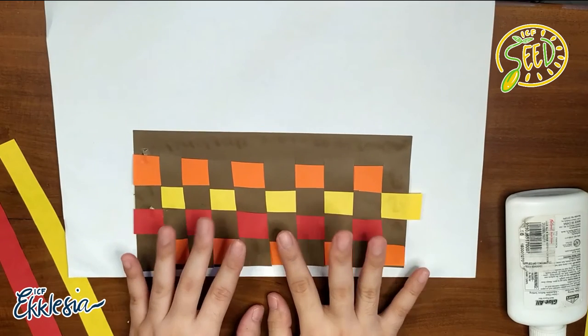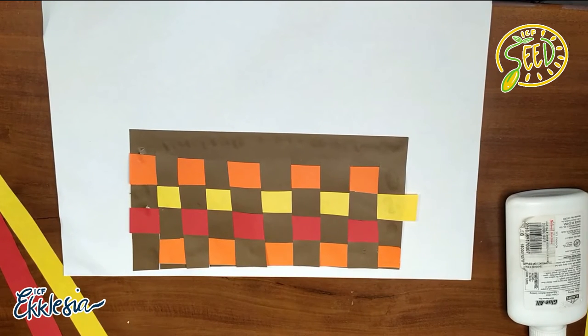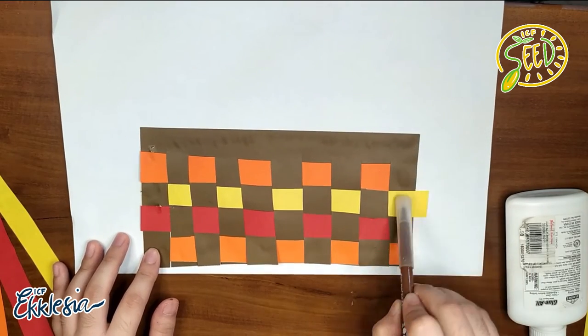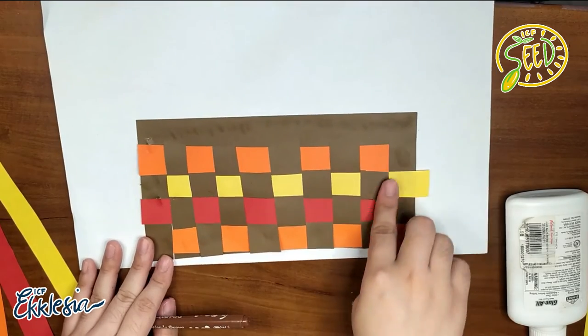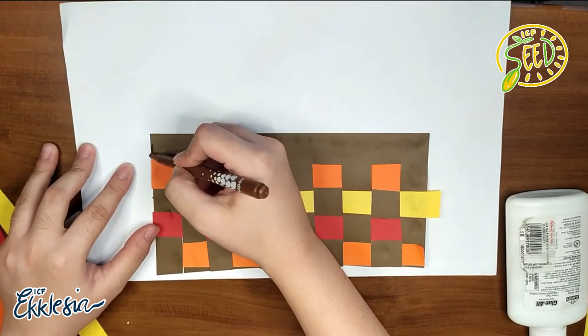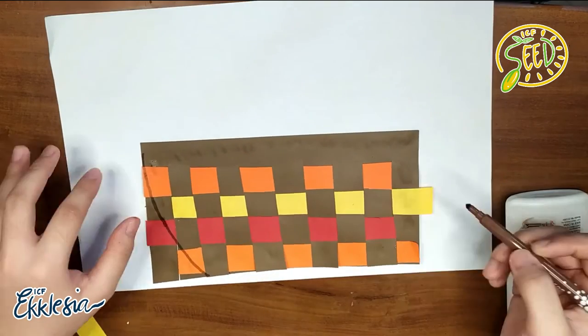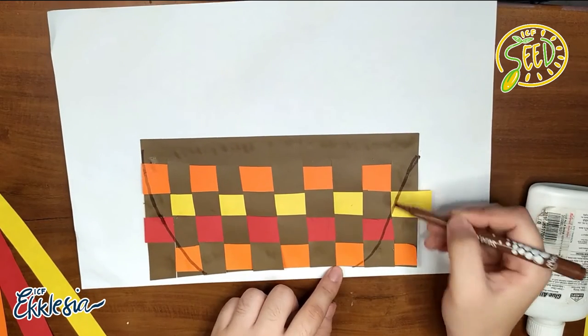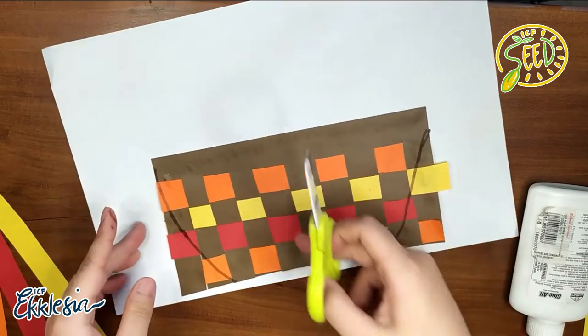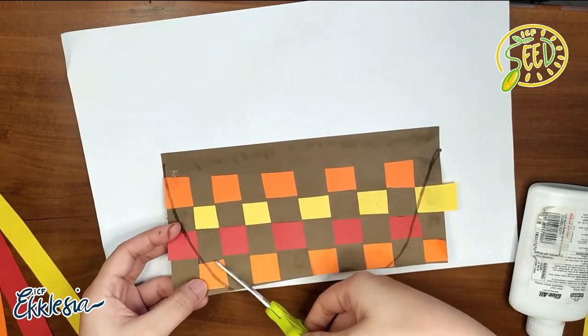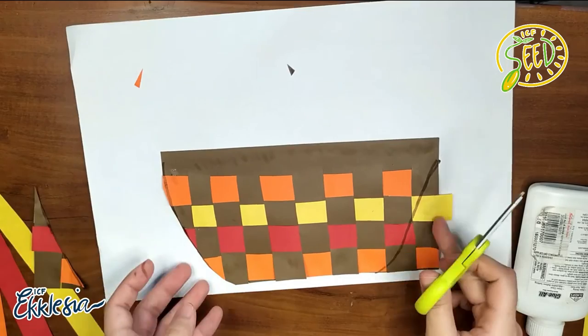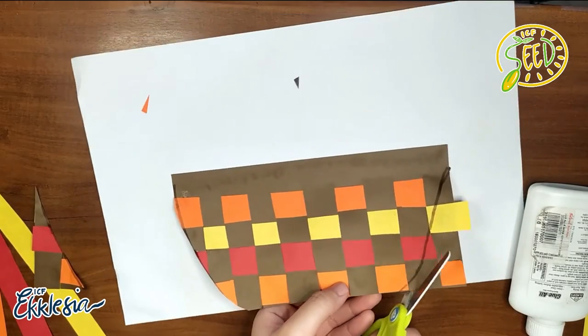Tapos na tayo sa weaving. Pero hindi pa tayo tapos sa art natin, sa craft. Ang sunod natin gagawin ay kumuha tayo ng pwedeng panulat, pwedeng marker, or pwedeng pencil at lagyan ng curve yung sa bawat sides na to. Hindi naman kailangan perfect na perfect siya. It's okay kahit hindi siya pantay. Ang importante, malagyan mo ng curve. At, gupitin yung merong line na nagawa natin. Mag-ingat ha. Pwedeng magpatulong kina ate or kuya.